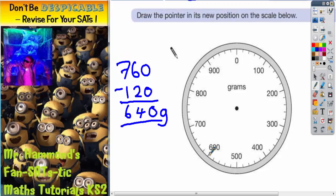So there's 600. Remember each gap goes up in 20s. So we're going up in 20s. So if that's 600, this will be 620, this will be 640, and that's what we're looking for. So the arrow has got to be there to 640.